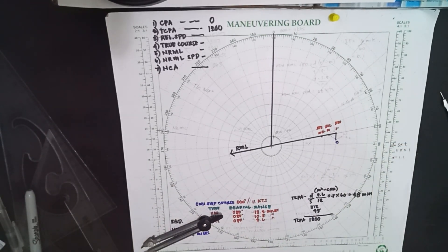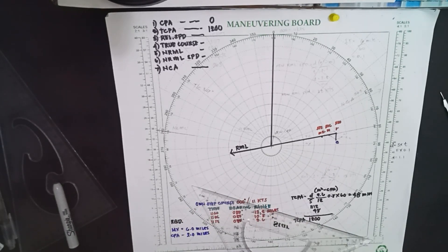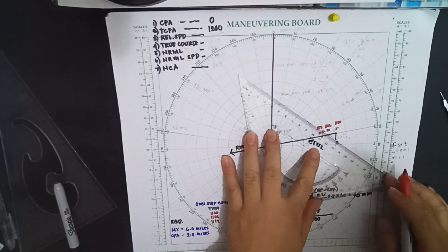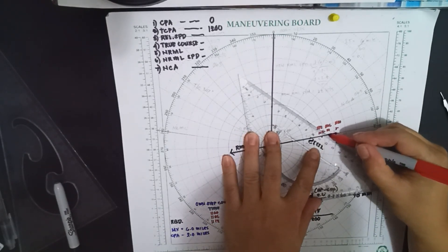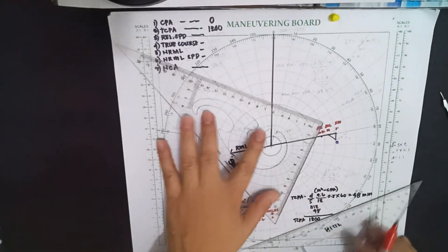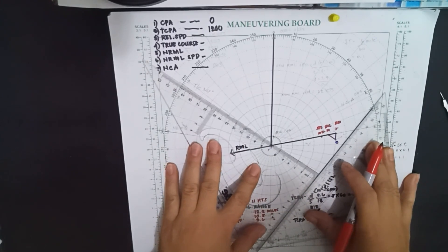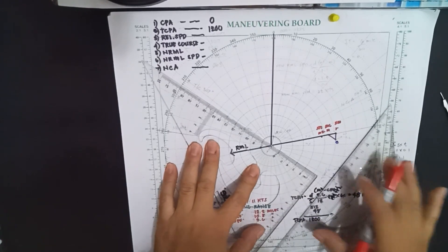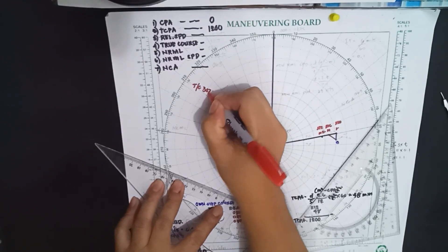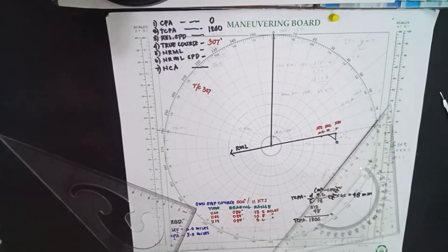So 1.1 — this will be our E. Now we are going to connect E to M in order to get the true course. Connect from E to M, then bring it to the center. You will now have the true course: 307 degrees.